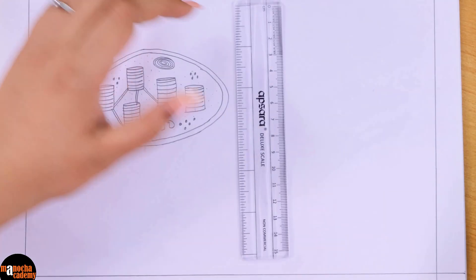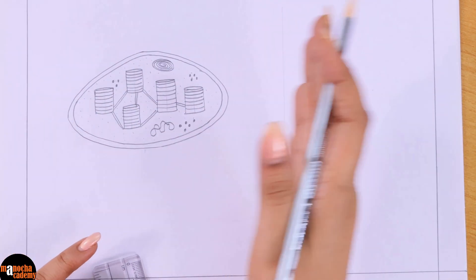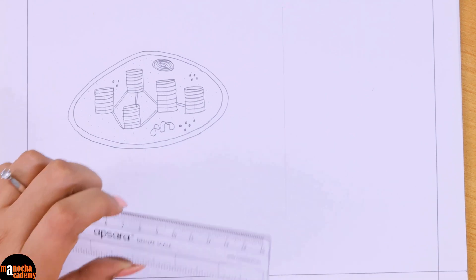So now we will label the diagram. And for that we can draw a faint line here so that we can keep all the labellings on the right hand side of this line.